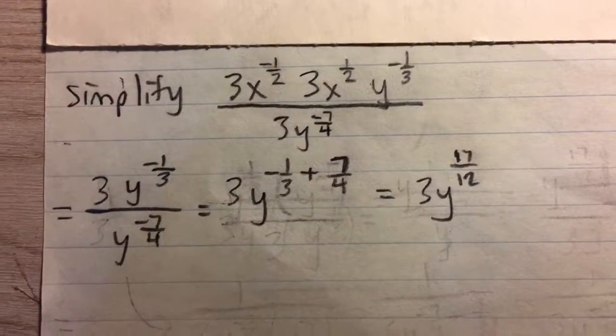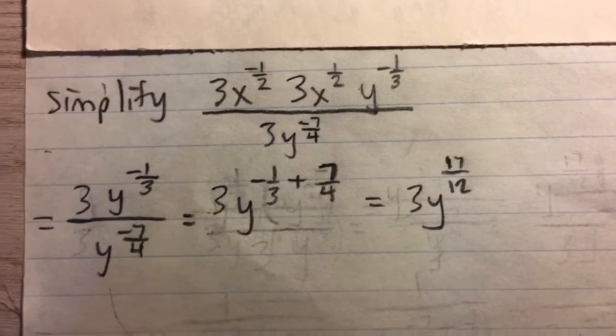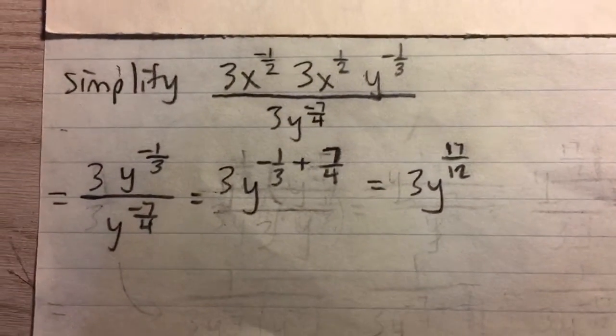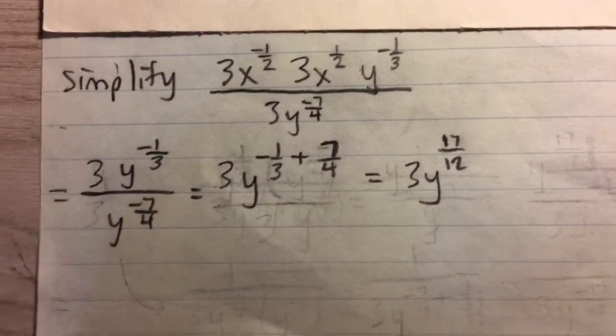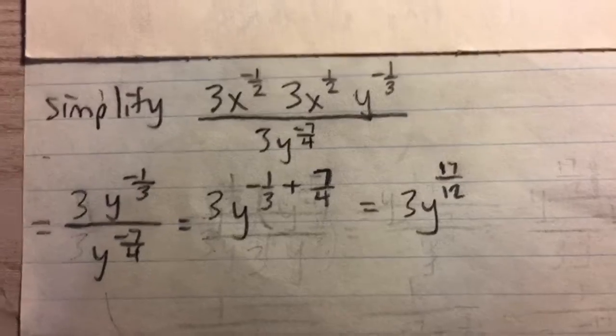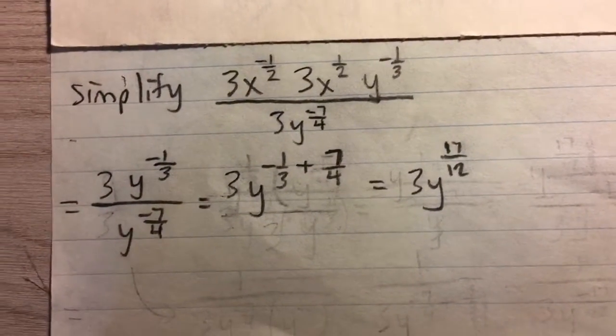Simplify 3x to the negative 1 half times 3x to the 1 half times y to the negative 1 third, all over 3y to the negative 7 over 4. That's a lot of terms right there, but the first thing we're going to do is